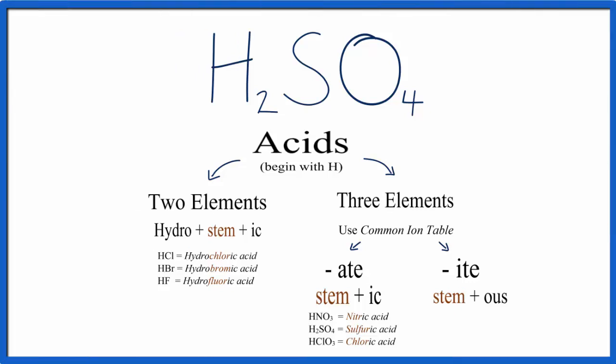To write the name for H2SO4, sulfuric acid, we use the flowchart here and a common ion table. We have H, S, and O. So we have three different elements, and if we have three different elements, we'll use this side of our flowchart.